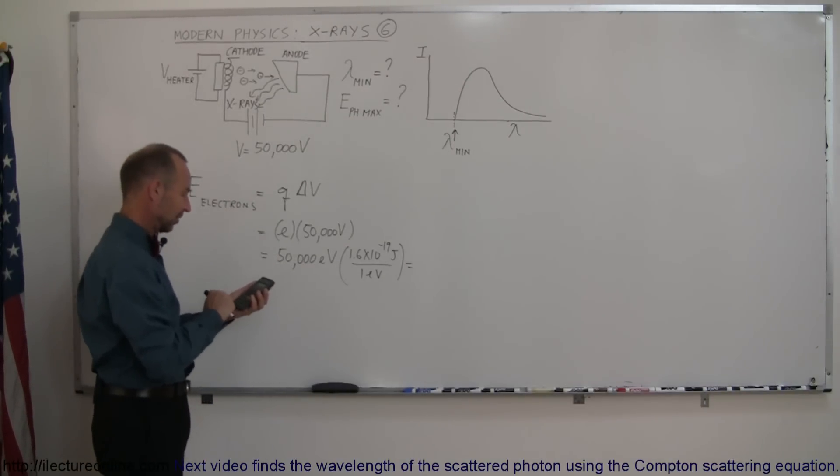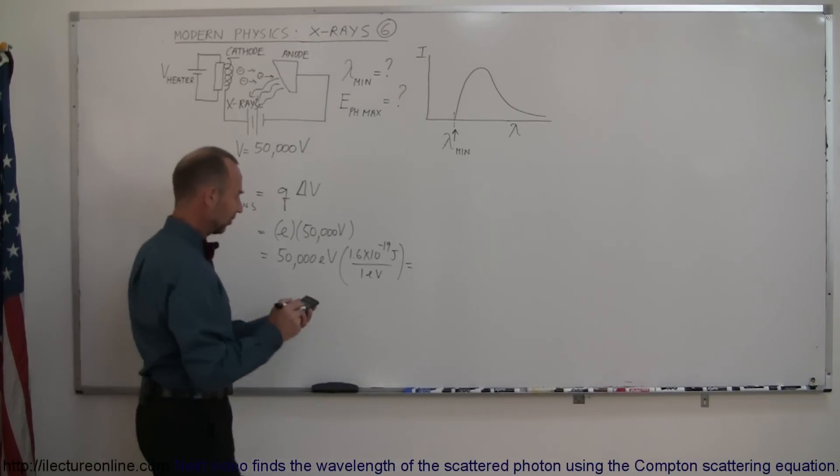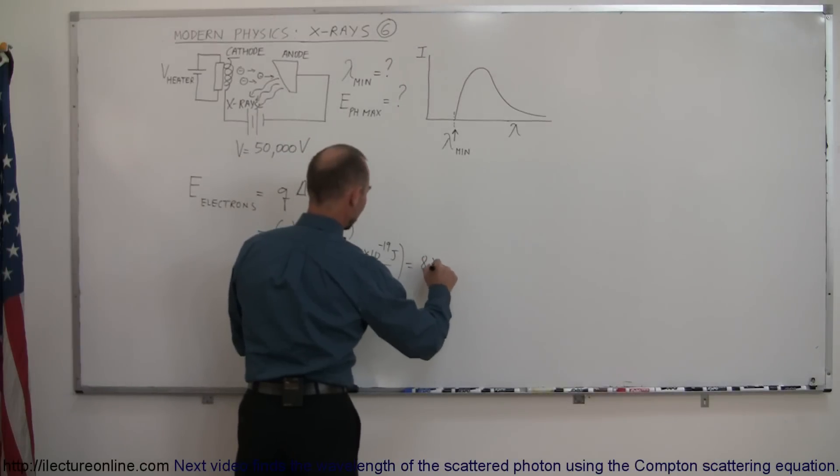So we have 50,000 times 1.6 e to the minus 19. And that gives us 8 times 10 to the minus 15 joules.